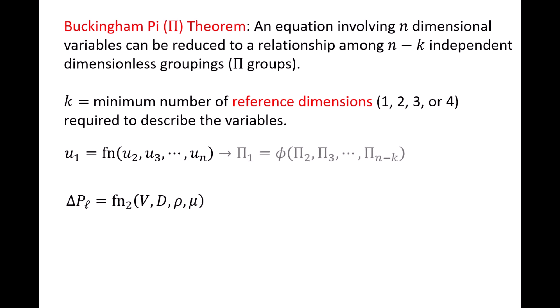We can rewrite the original problem as a relationship among n minus k dimensionless groups. Pi1 is some function phi of pi2 through pi n minus k. Once again, going back to the pipe scenario, we rewrite the relationship of the five-dimensional variables as two-dimensionless pi groups. Pi1 is delta PL d over rho v squared, and this is some function phi of pi2, which is the Reynolds number.